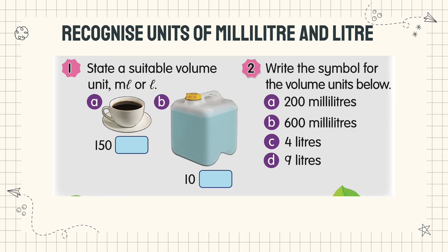Let's redo this question together. Number one: state a suitable volume unit, ml or L. Nyatakan unit isi padu yang sesuai ml atau L. A: 150 ml. Kenapa ml? Sebab isi padunya sedikit.